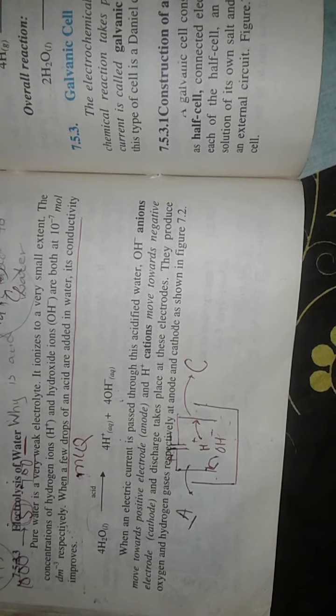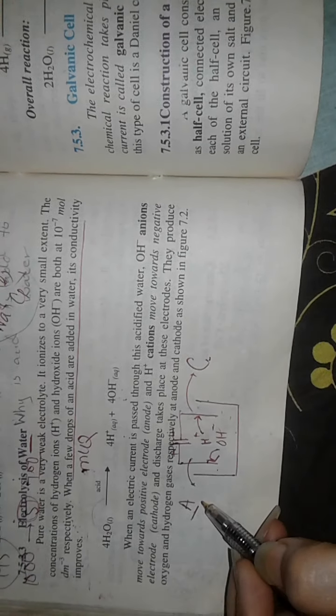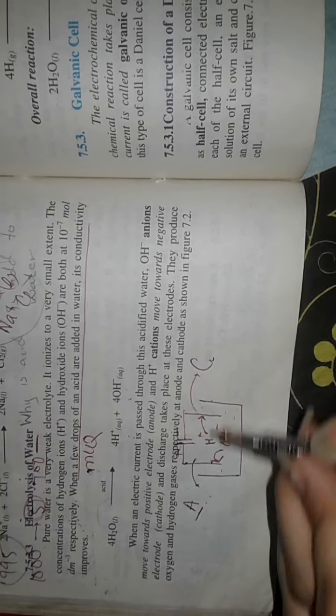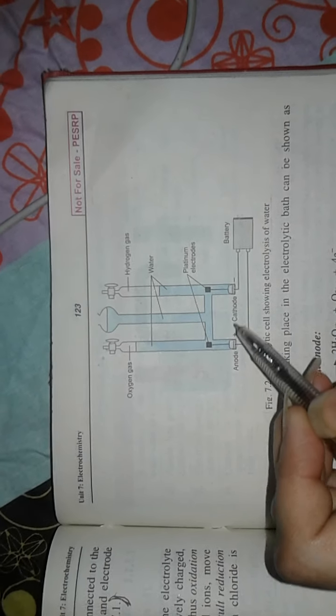Remember that in anode is oxidation and in cathode is reduction. It means that electrons will be lost and gained. This is the diagram.